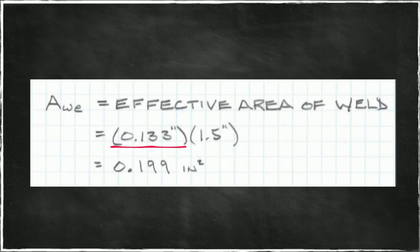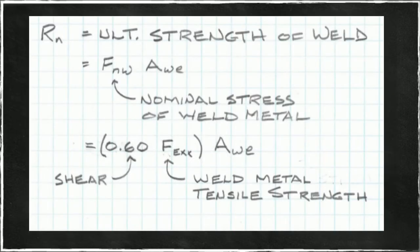Our effective weld area will be the 0.133 inches, the throat dimension, times the one and a half inches, the length dimension, bringing us to an area, an effective weld area of 0.199 square inches. Our ultimate strength of the weld, or nominal strength, R_n, is going to be the nominal stress of the weld metal times the area, the effective weld area.